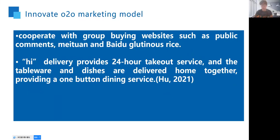The O2O marketing model refers to the business model of online marketing and online purchase driving offline operations and offline consumption. O2O pushes messages about offline stores to internet users by means of discounts, providing information and service reservations, so as to convert them into offline customers, which is particularly suitable for goods and services that must be consumed in the store. When it comes to Haidilao's exploration of the O2O model, the first thing is its cooperation with group buying websites such as Dianping, Meituan, and Baidu. Group buying often attracts customers to buy online because of coupons or small discounts, so as to promote customers to visit stores for consumption.